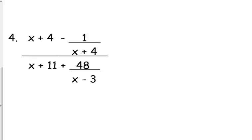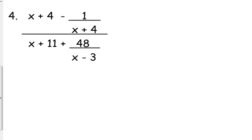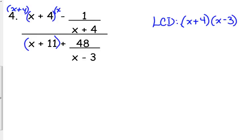I might do it with this example since it's a little bit more complex. So we have x plus 4 minus 1 over x plus 4 all over x plus 11 plus 48 over x minus 3. We only have two little denominators. I don't think that's the issue. Identifying that the LCD here is x plus 4 times x minus 3. What most people tend to forget, though, where they make the most mistakes on these is these expressions, the x plus 4 and the x plus 11. The ones that don't have a denominator, they tend to forget that they need to multiply that as well by the LCD.